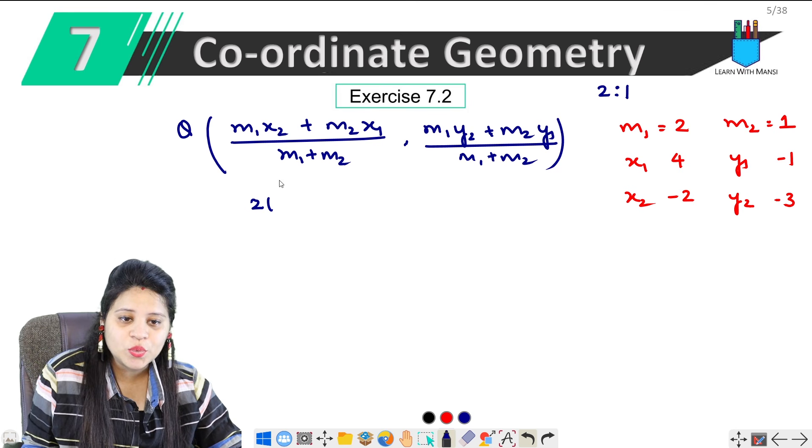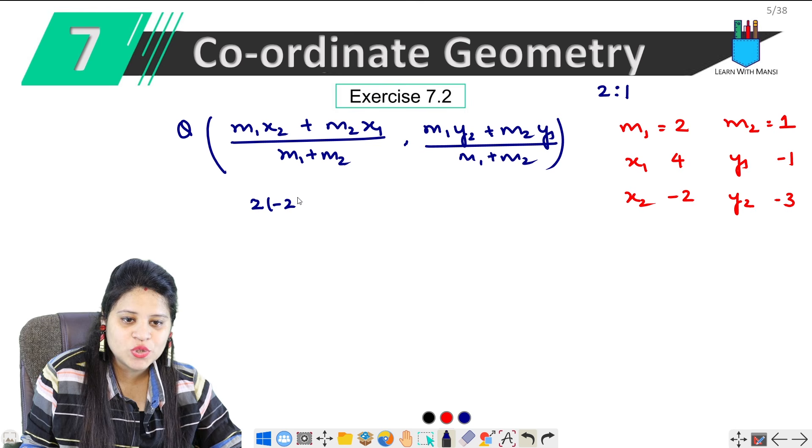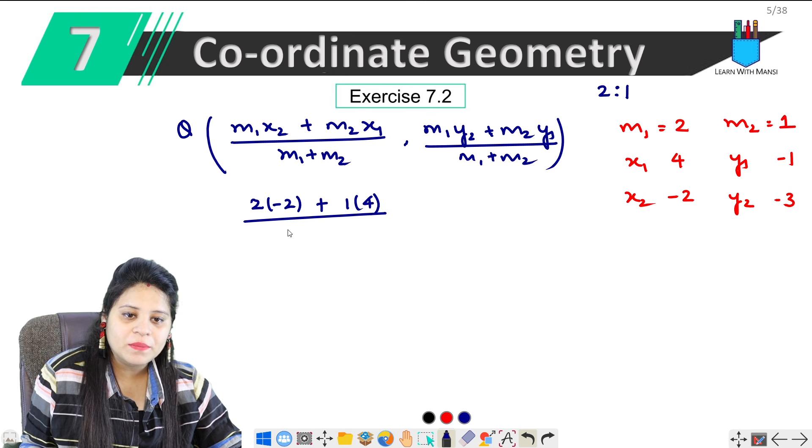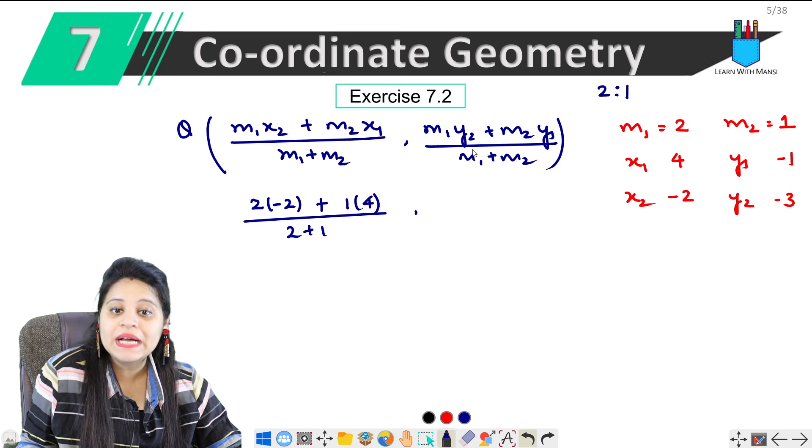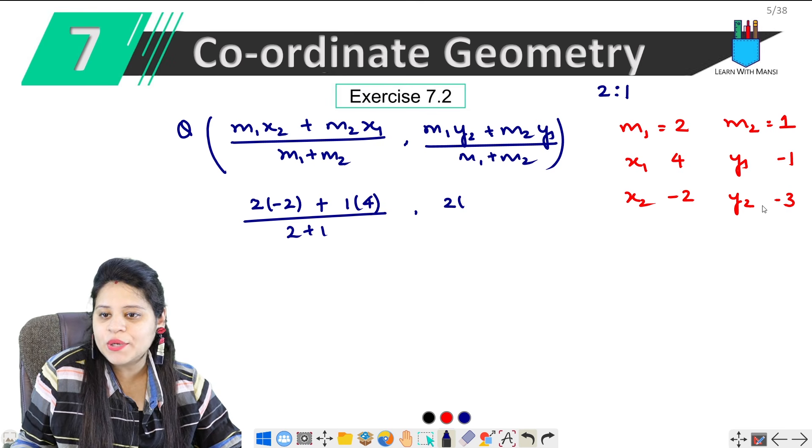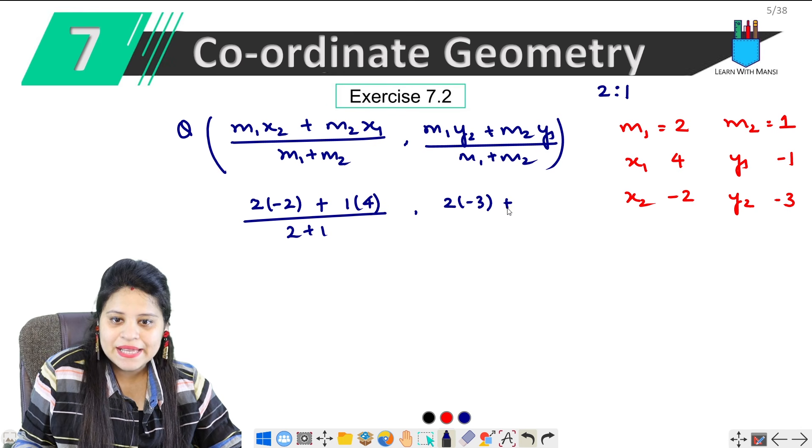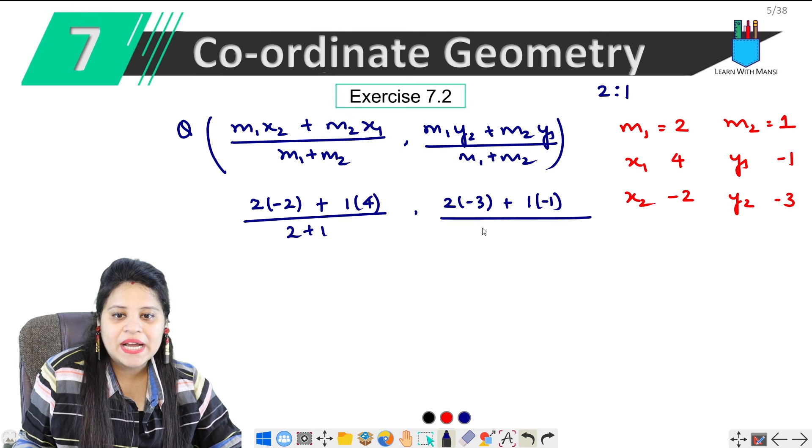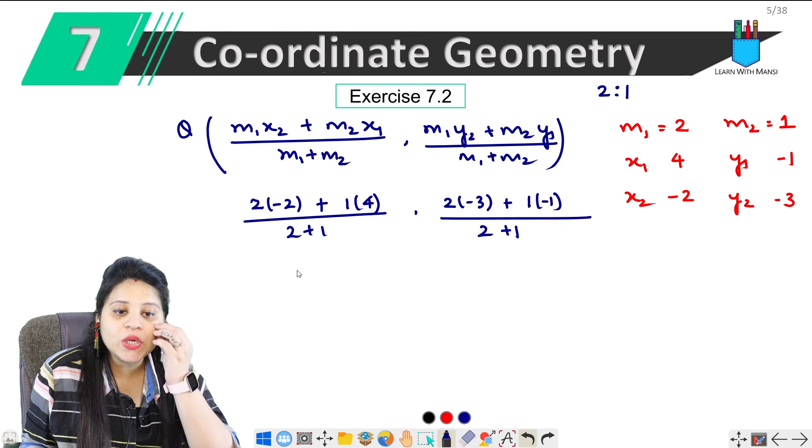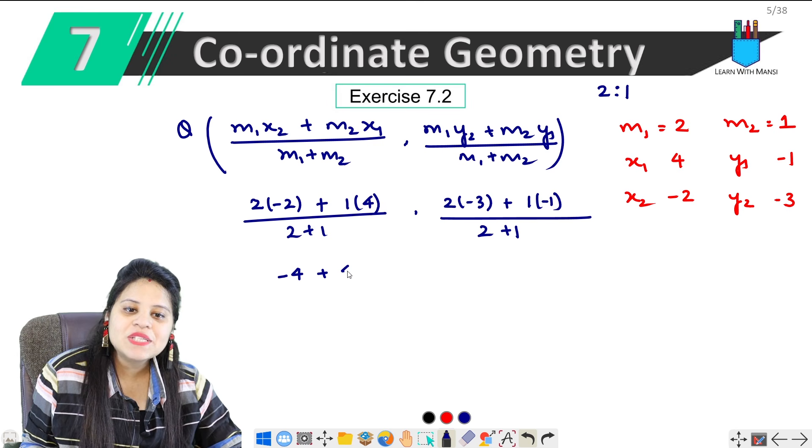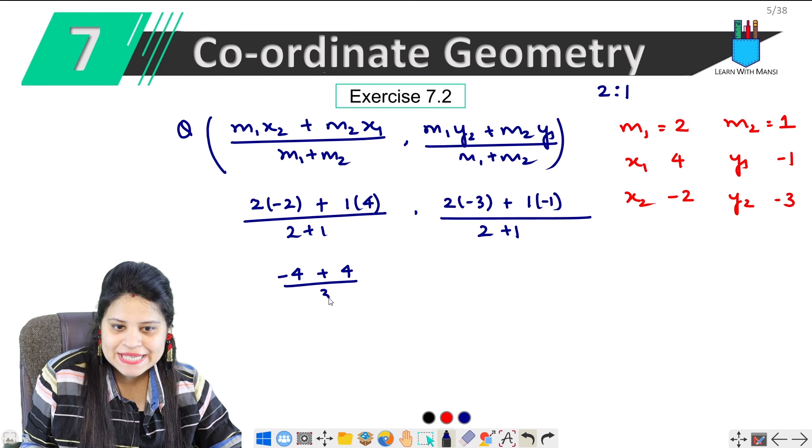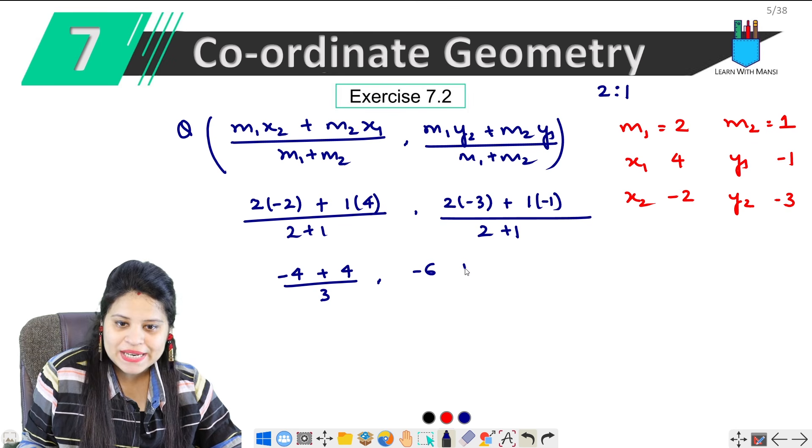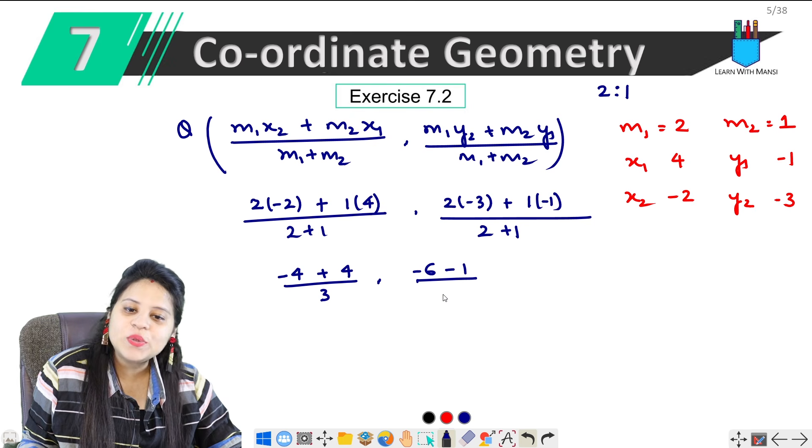m1 is 2, x2 is -2. m2 is 1, x1 is 4, upon m2 + m1 is 3. Y: 2 into -3, then plus m2 is 1, y1 is -1. Upon m2 + m1 is 3. This will be 2 into -2 is -4, plus 4, upon 3. And 2 into -3 is -6, plus -1, upon 3.